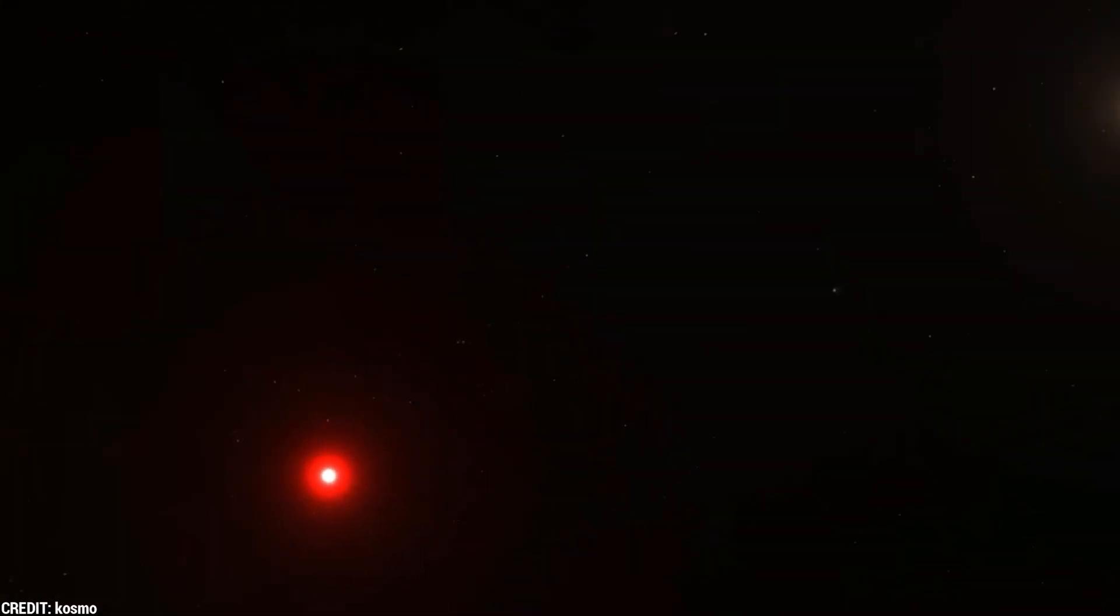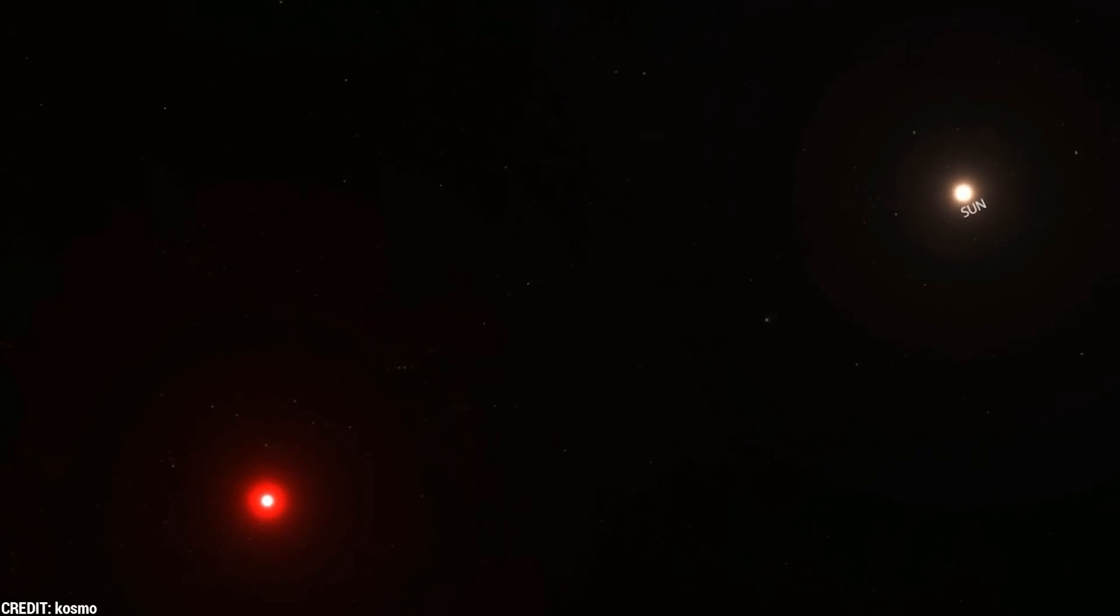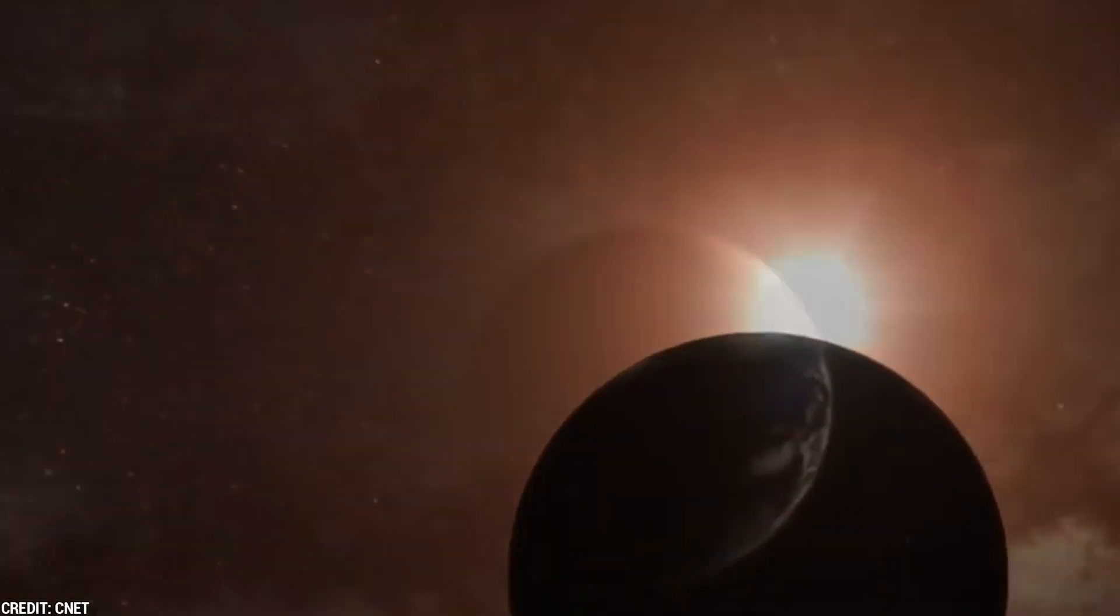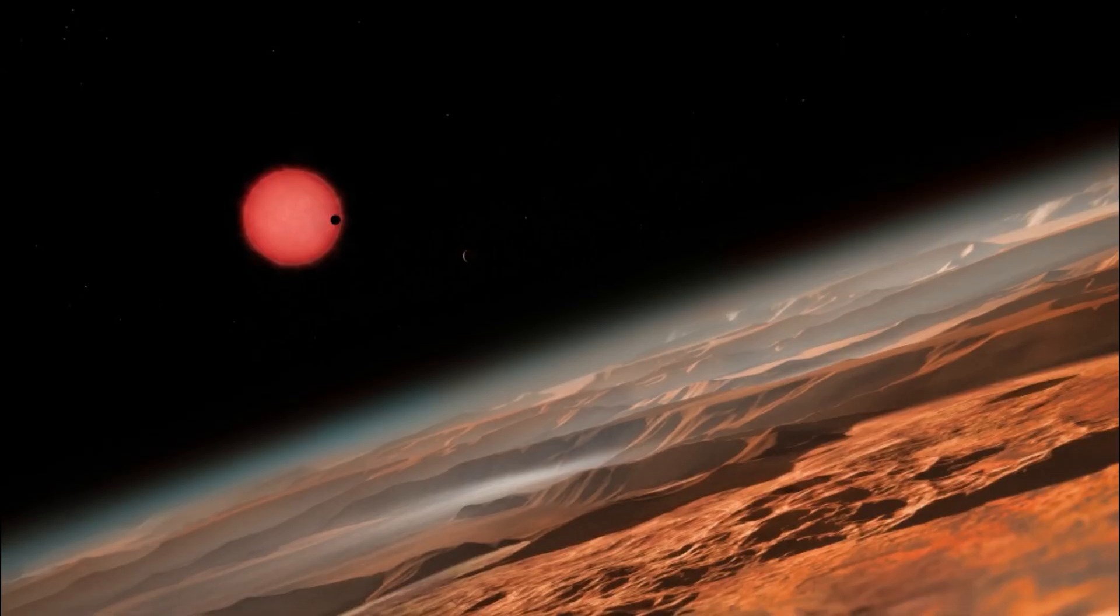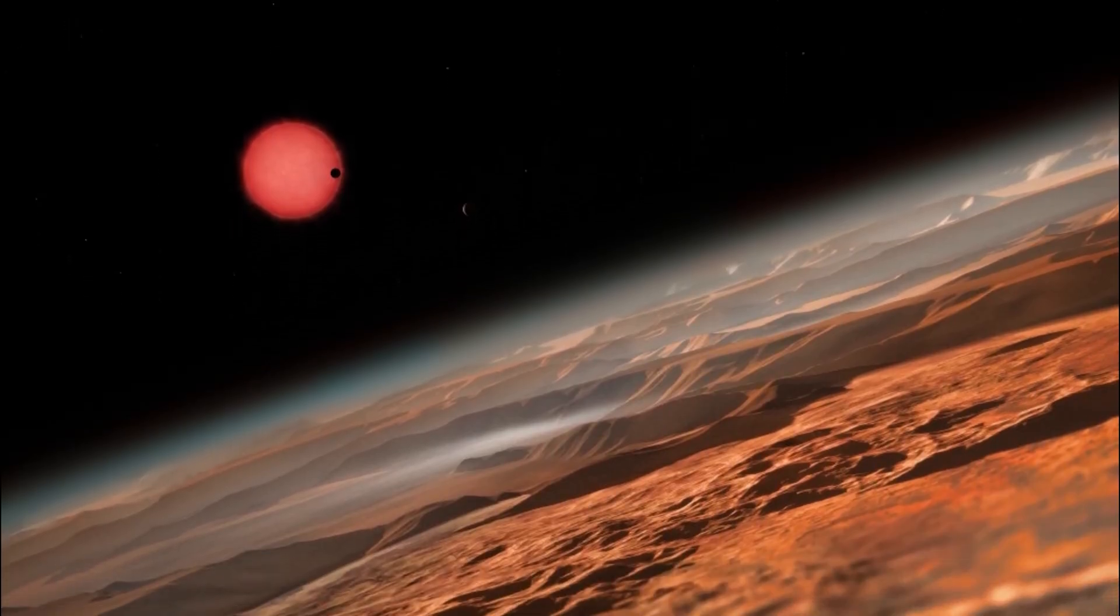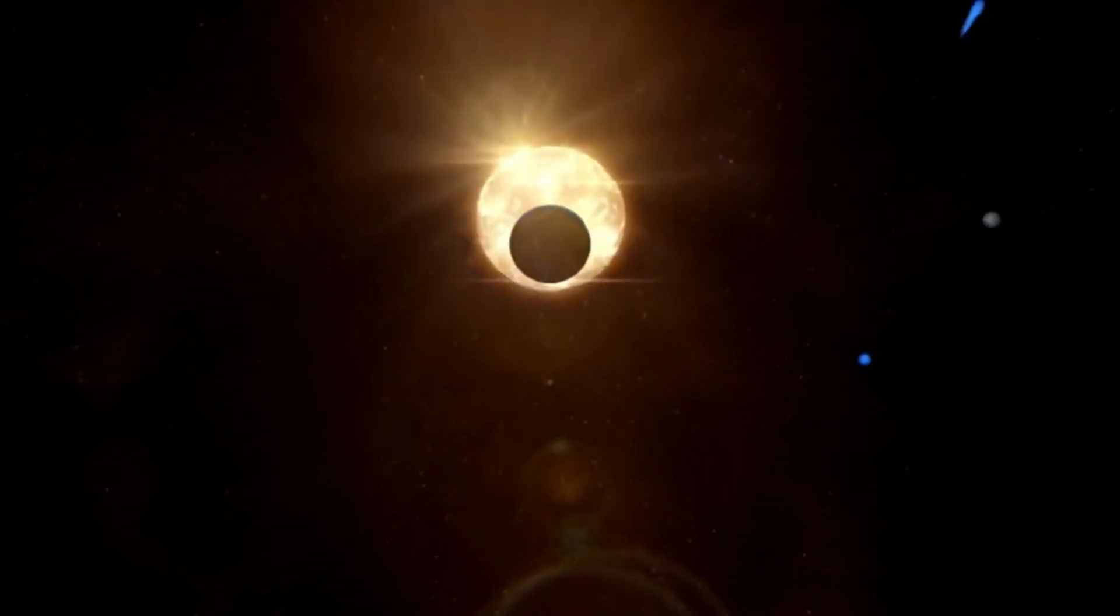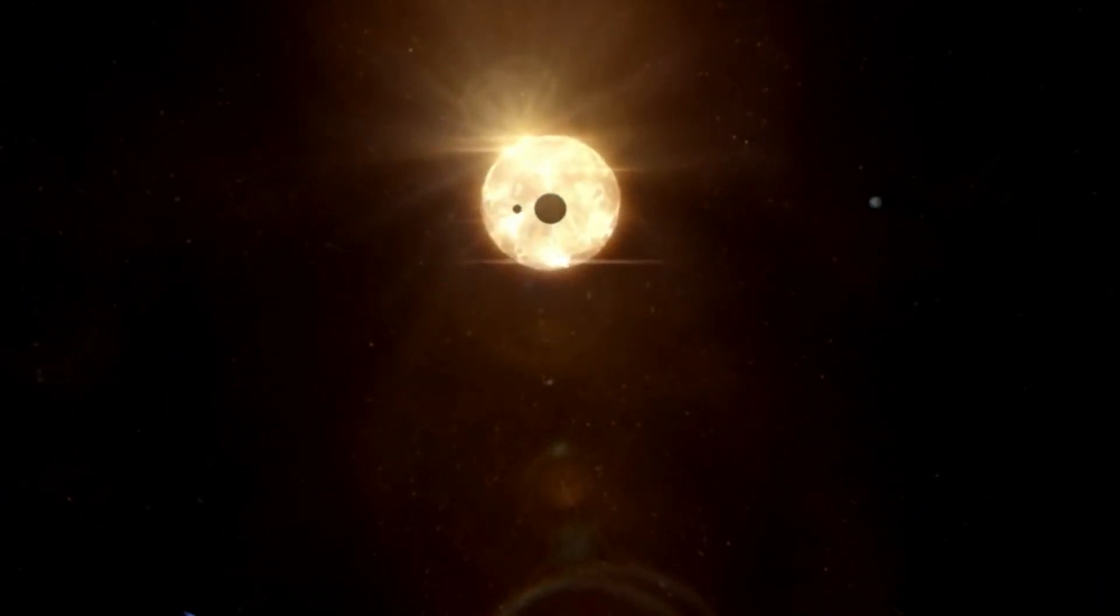But before you start packing your bags for an interplanetary adventure, you should know that Proxima B is far from a second Earth. For one, the planet is likely tidally locked with its star, which means one side faces the star while the other is always in darkness. That's definitely not a comfortable environment for any potential life forms, and any water that comes too close to the star would be boiled away by its powerful radiation. On the other hand, if a planet is too far from its star, it won't receive enough heat and all of its water will freeze.